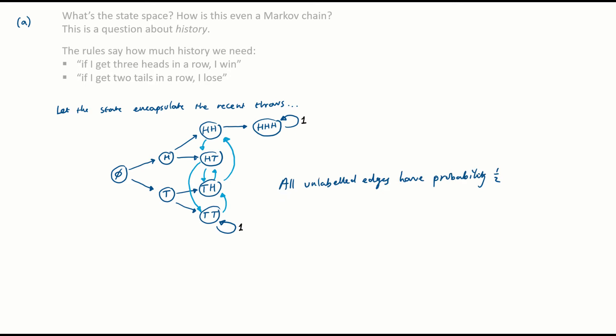Let's just check we've answered the question. It gives us the hint that the state space diagram should have eight states — count up how many we've got here. We've got eight. Good.